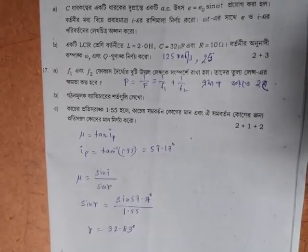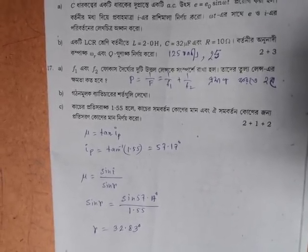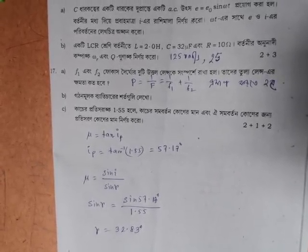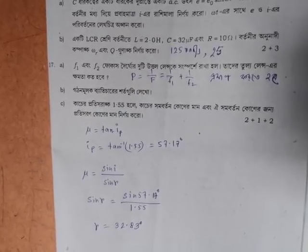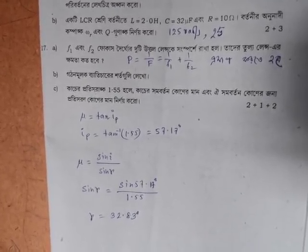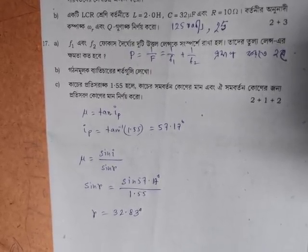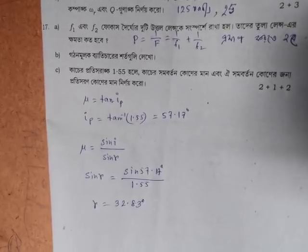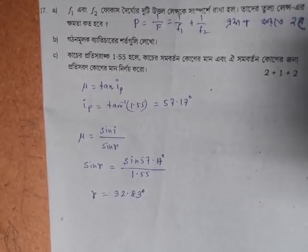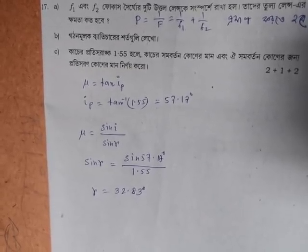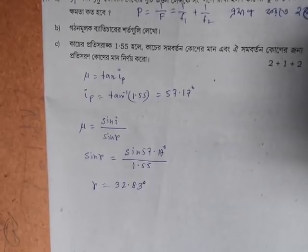In the last question, the formula is 1 by F — combining F1 and F2 — and P is equal to F1 plus F2. Thank you everyone!